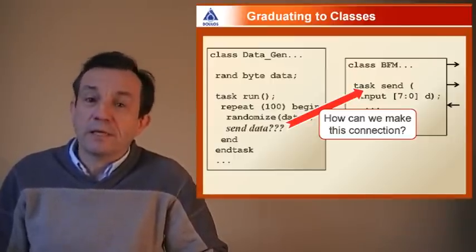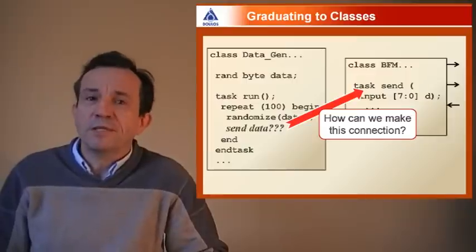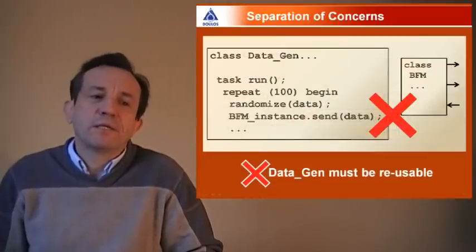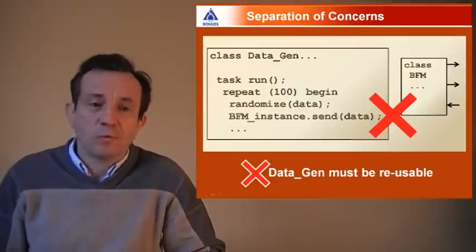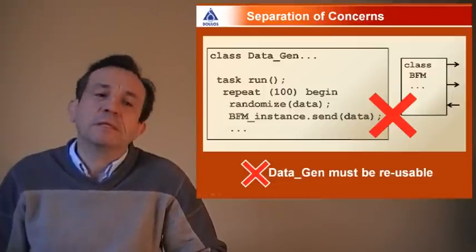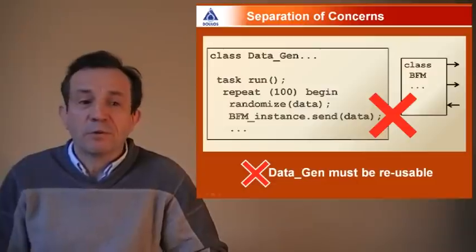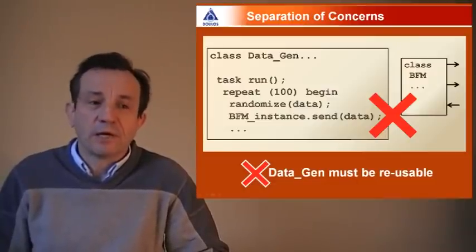Well, we can do it rather easily, but unfortunately it's very easy to do it wrongly. Here's the wrong way of doing it. If we ask the data generator to find out where the bus functional model lives and carefully call the send method in the bus functional model object, we get a piece of code like the one on the page here,